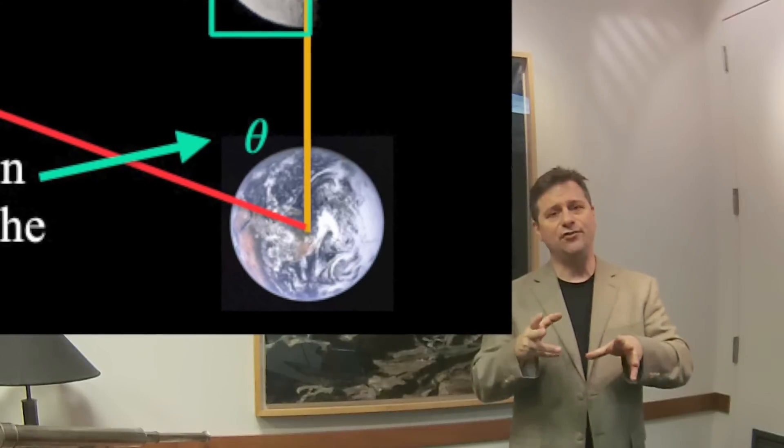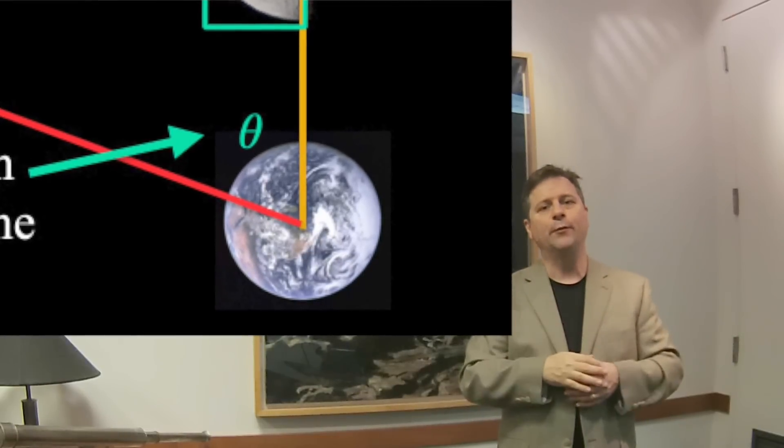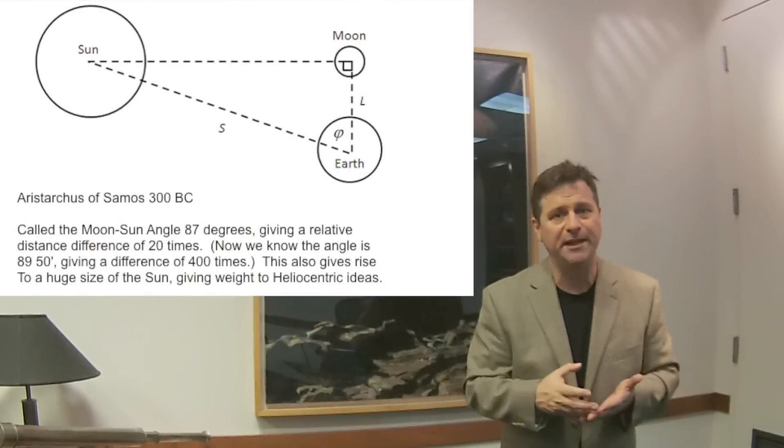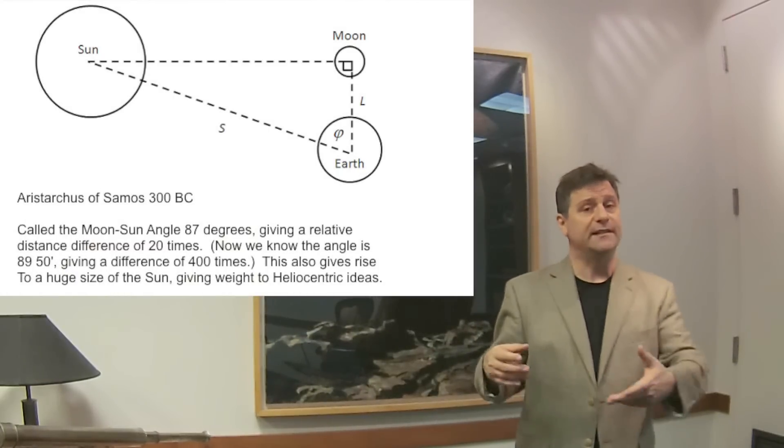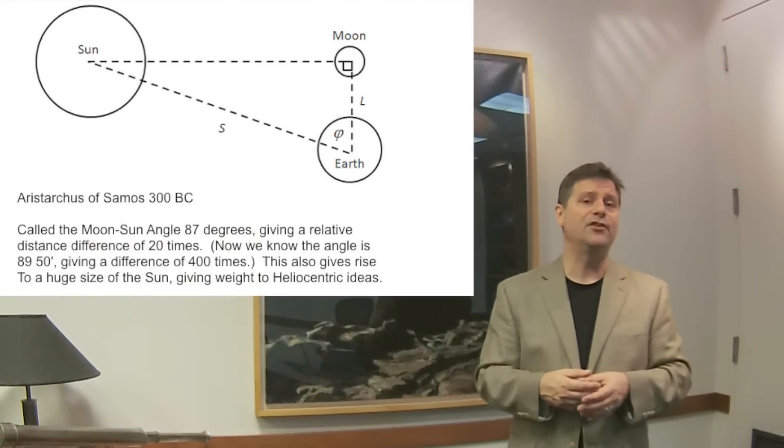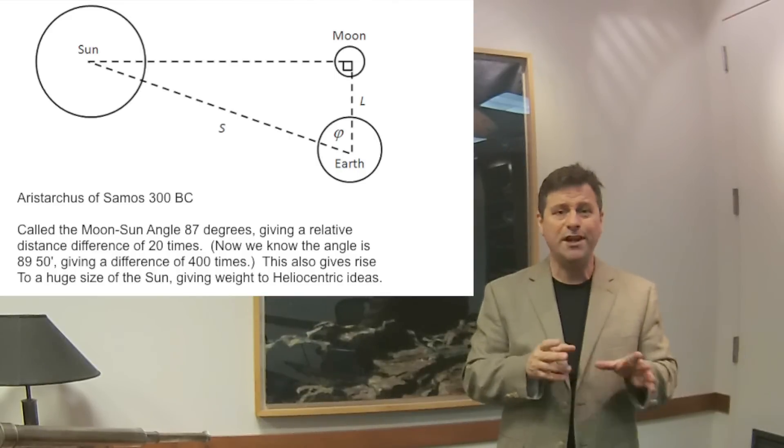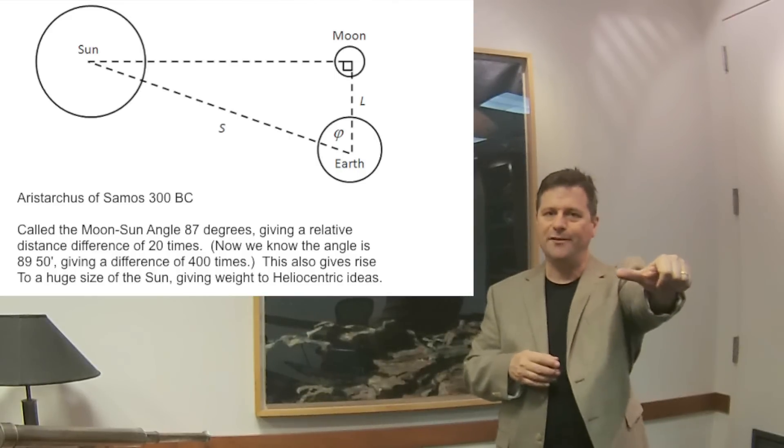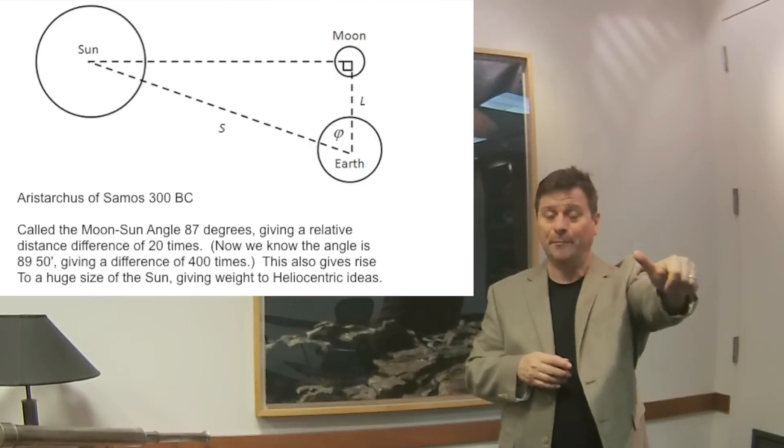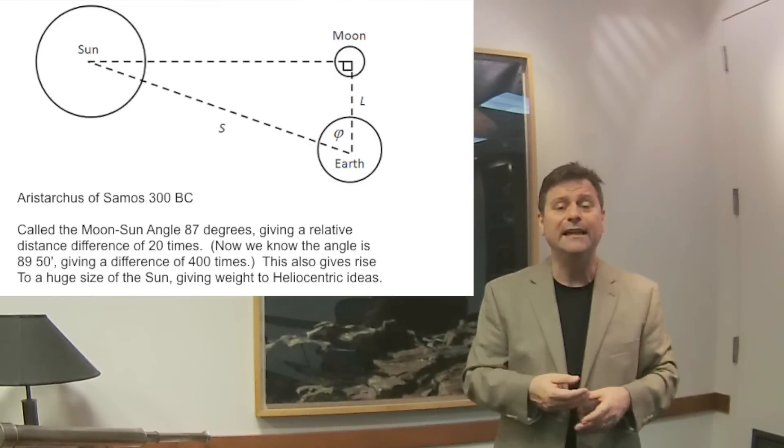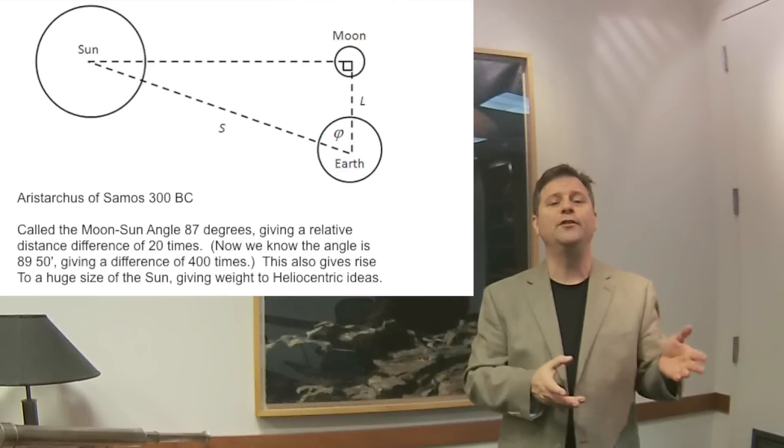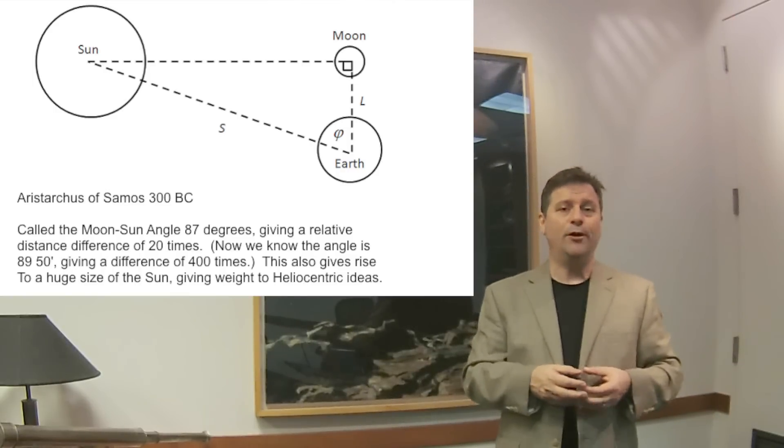So what he measured in the sky was roughly about 87 degrees. That's a pretty good measurement. It's not 90 degrees, it's about 87 degrees. So he was able to roughly get about one degree. Remember, your thumb held at arm's length is about a degree. So he used a similar method or something more accurate than that.